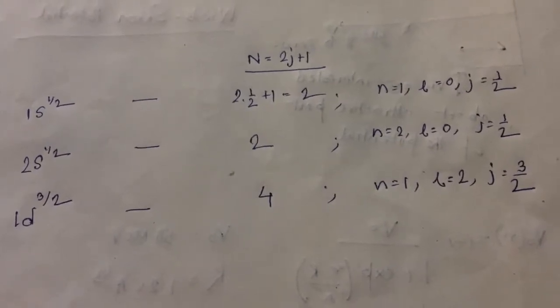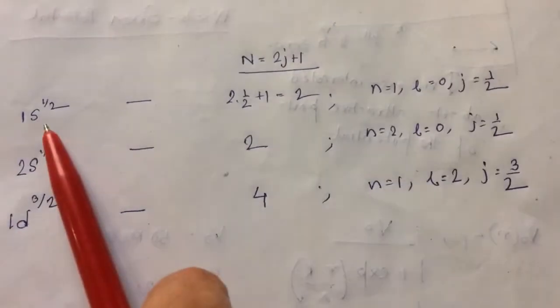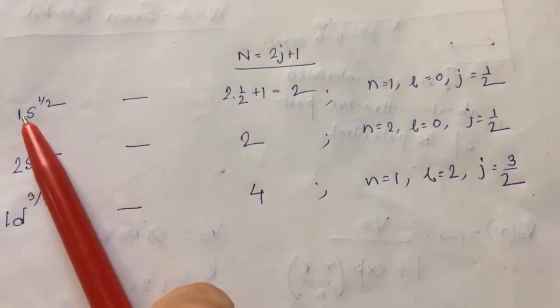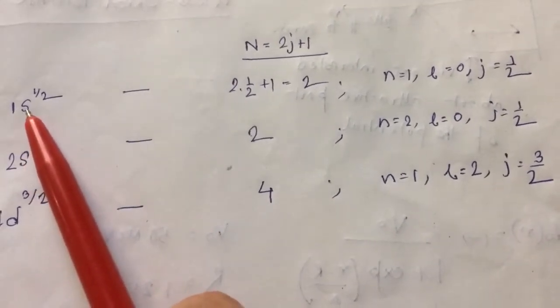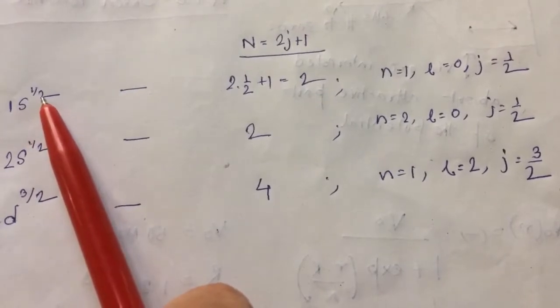We can find the quantum numbers for any state. For example, 1s half: the principal quantum number n is equal to 1, s is equal to 0, and the J value is equal to half.